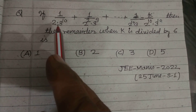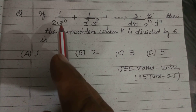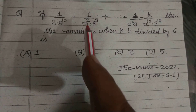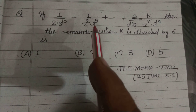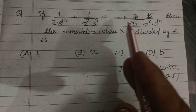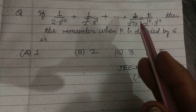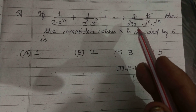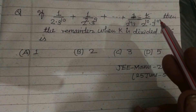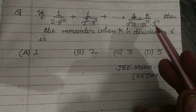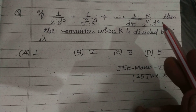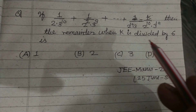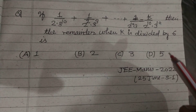The problem: if 1/(2 · 3^10) + 1/(2^2 · 3^9) + ... + 1/(2^10 · 3) = k/(2^10 · 3^10), then find the remainder when k is divided by 6.